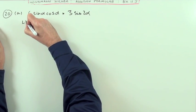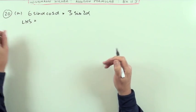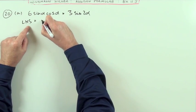The technique is you take one side and demonstrate by using various other identities that it produces the other side. So I'll start with the left-hand side.